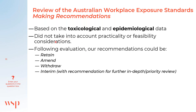Once we had evaluated the data for a particular chemical, we had four options for recommendation. We could retain the original number, supported by the data we reviewed. We could amend with a new number — either higher or lower, depending on the evidence. We could withdraw, usually if the chemical was rare or no longer used in Australian industries or labs. And as mentioned, we could recommend an interim standard if there was still uncertainty, with a recommendation for an in-depth or priority review.